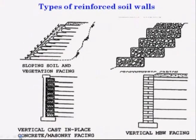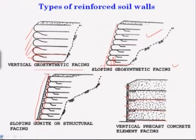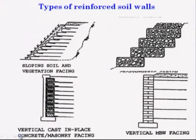Additionally: the second type is sloping soil with vegetation facing. For economy, once you are making a sloping face of the reinforcing wall, these surfaces are all exposed to the outside. To prevent this exposure, you can use vegetation — you can allow grass to grow so that the face will be protected.